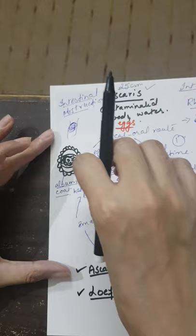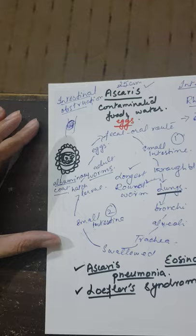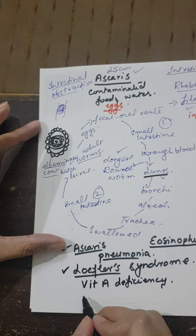Ascaris also causes nutritional deficiencies because it feeds on the food passing through the intestine. This leads to nutritional anemia and vitamin A deficiency.